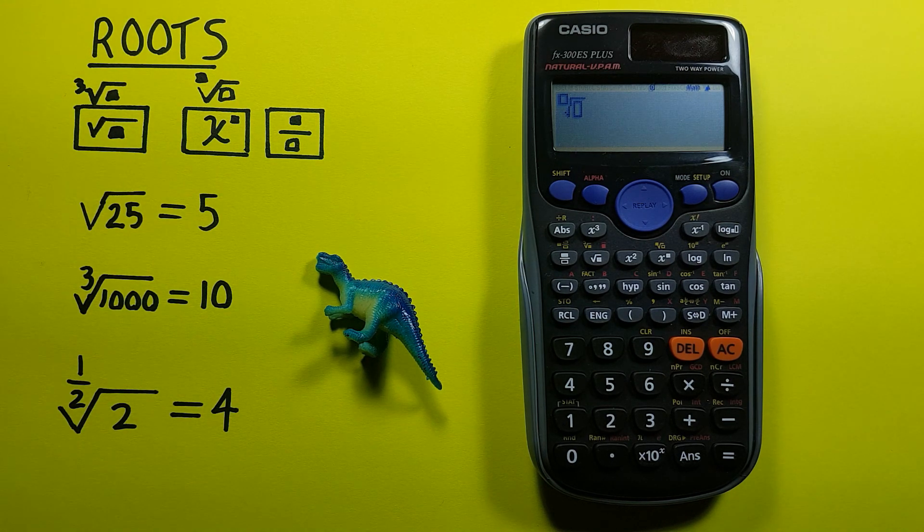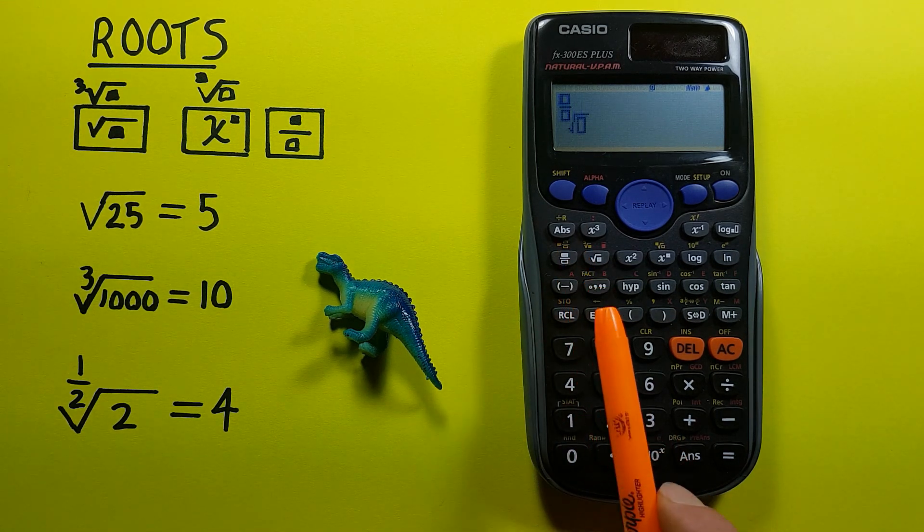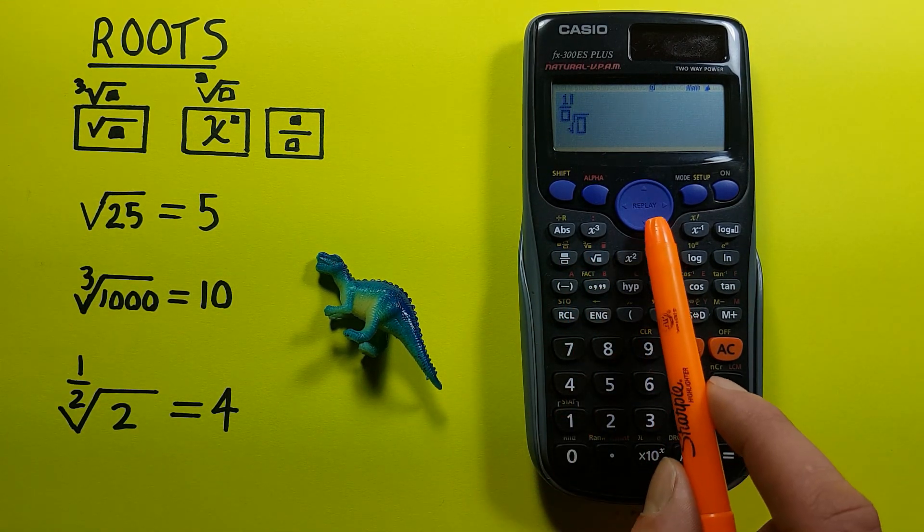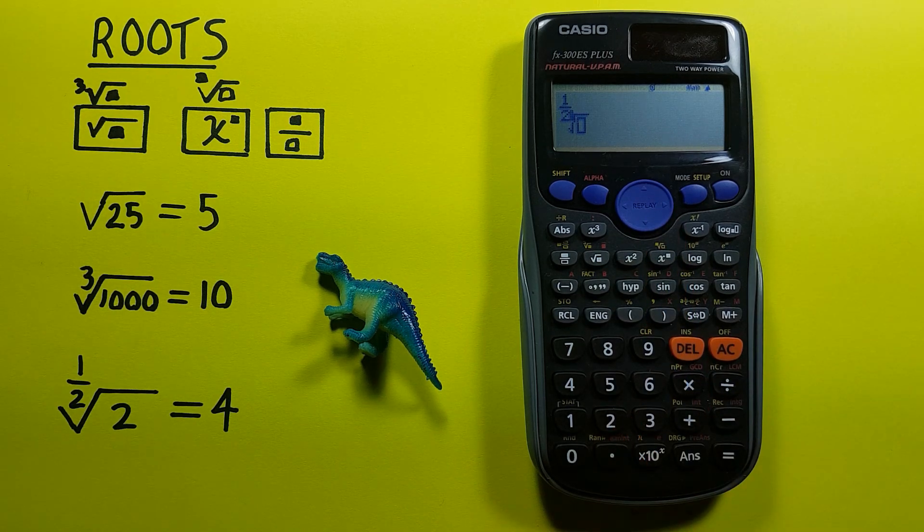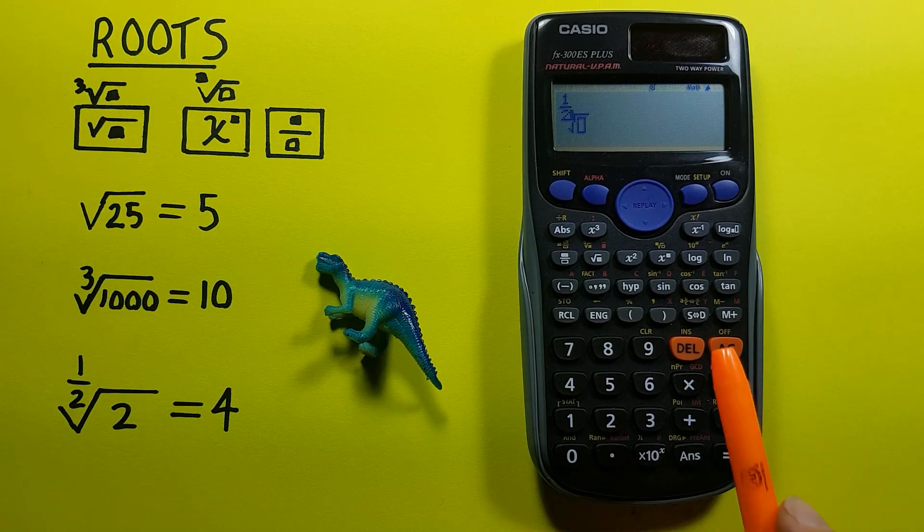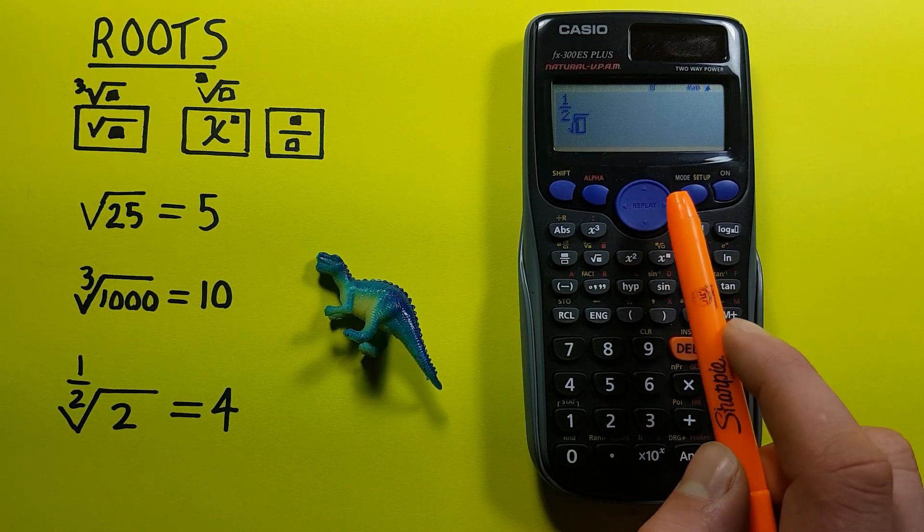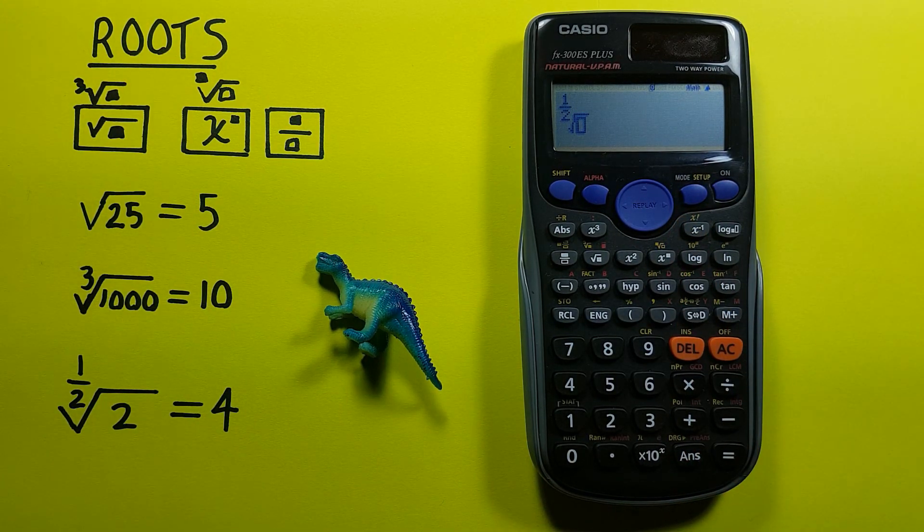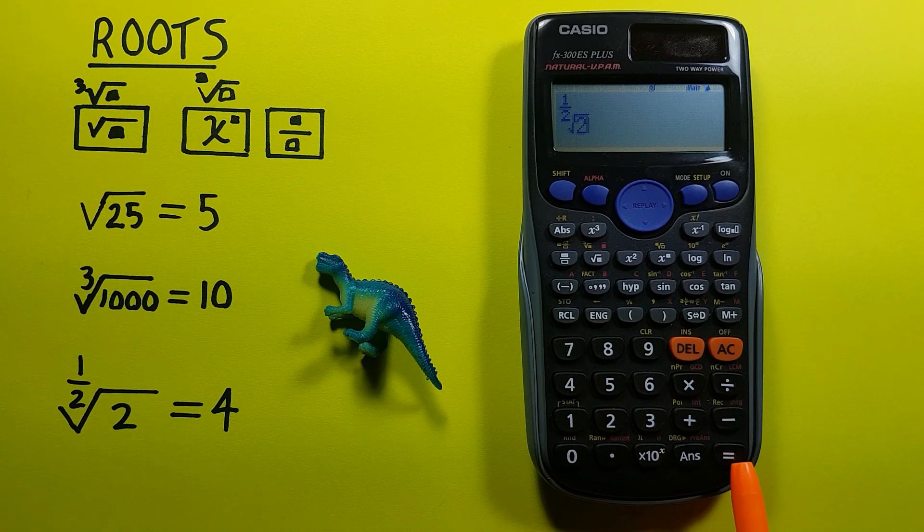You can see now there's a box in the root position there, so we can enter whatever we want. And for this example we're entering it as a fraction, so we press the fraction key, 1 down 2. You can see we now have 1 over 2 in our root spot there. And then we press right twice on the keypad so that our cursor is in the box under the root line.